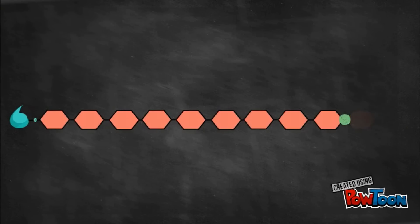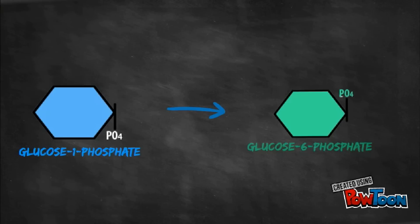Step 3, conversion of glucose-1-phosphate to glucose-6-phosphate. Since the glucose released by glycogen phosphorylase is still in the glucose-1-phosphate form, it has to be converted first to glucose-6-phosphate via the enzyme phosphoglucomutase.